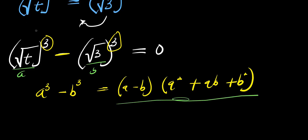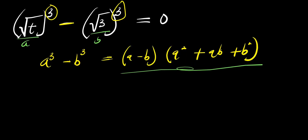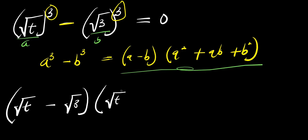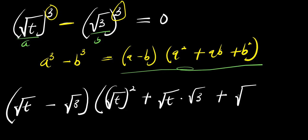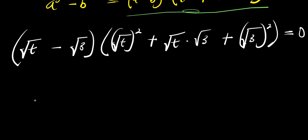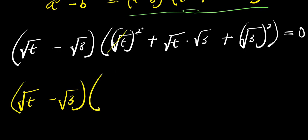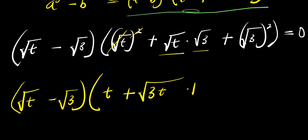So applying the identity, we get: root t minus root three, times root t squared plus root t times root three plus root three squared, equals zero. Simplifying: root t minus root three, times t plus root three t plus three, equals zero.